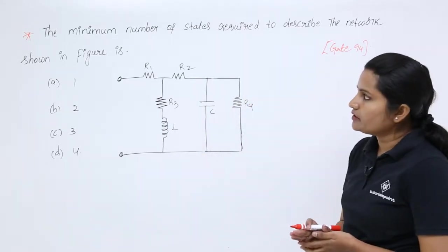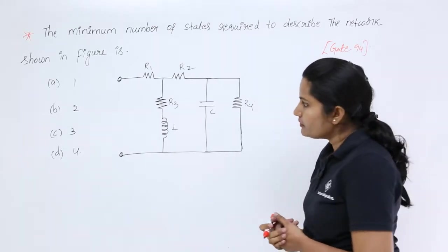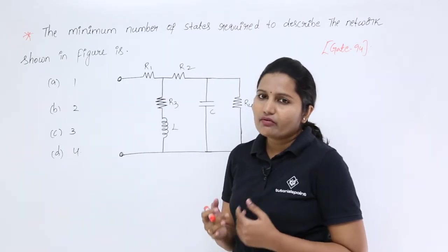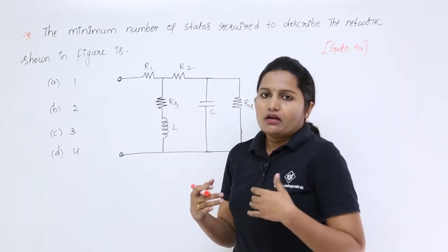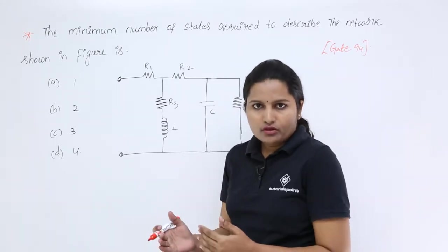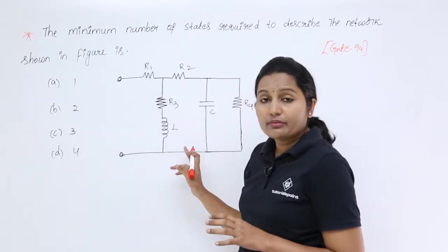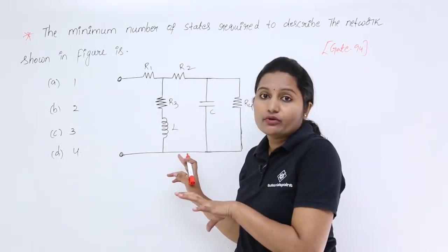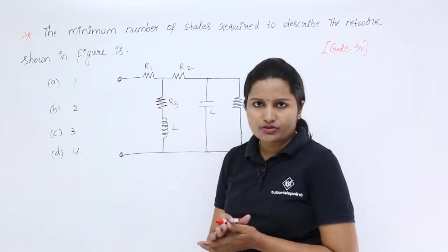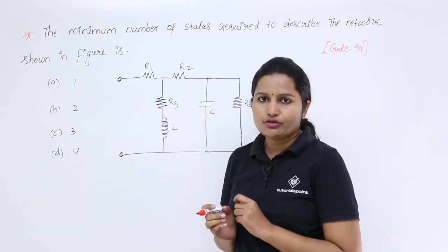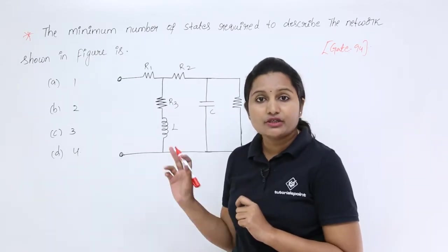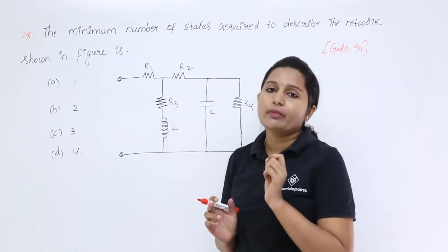To describe this network, how many states are required? How many states do we need to transmit or follow to describe the total network — that means to get your state model. We are having a simple shortcut to find out the number of states to determine a network.